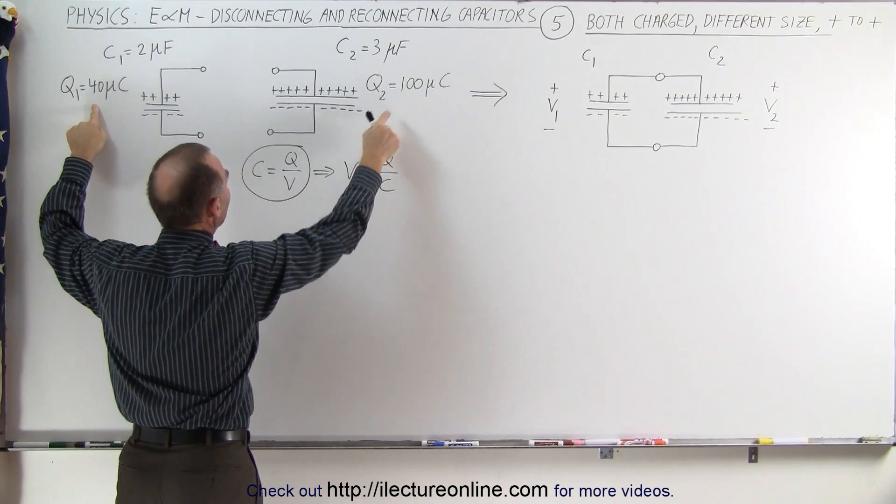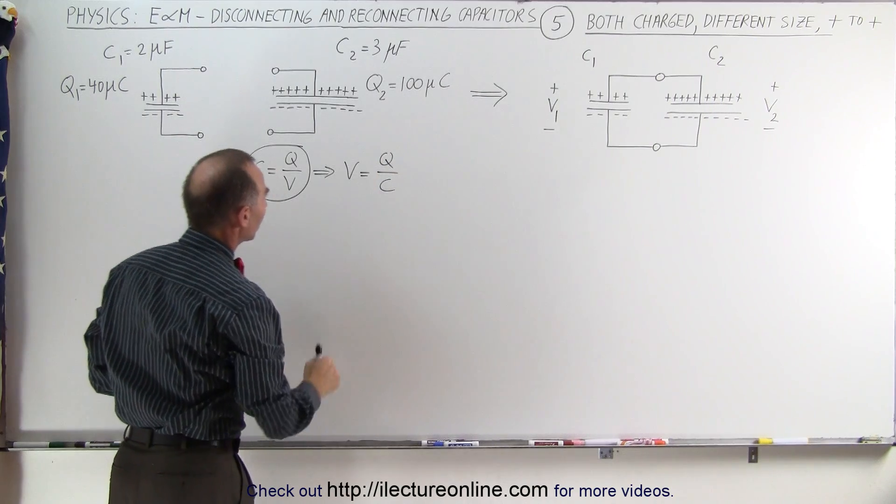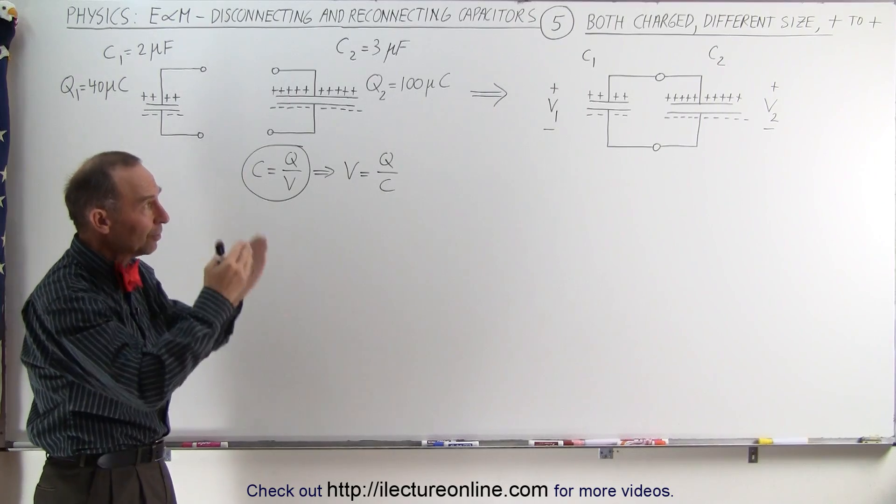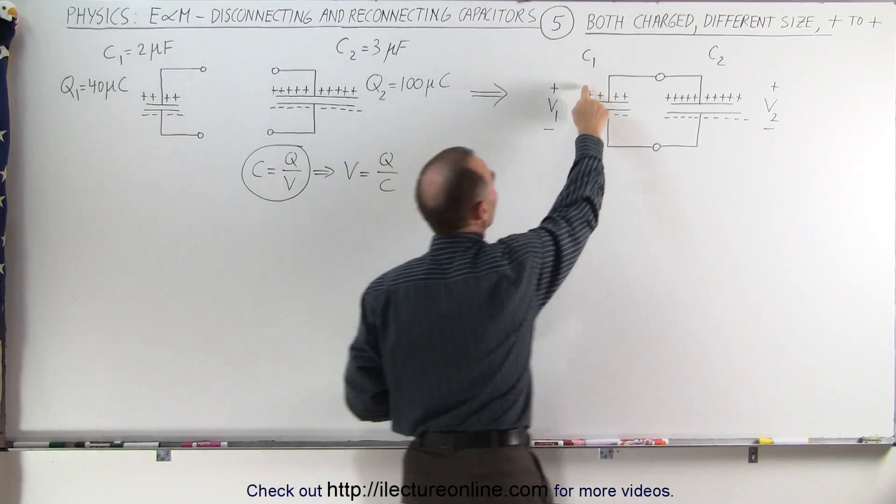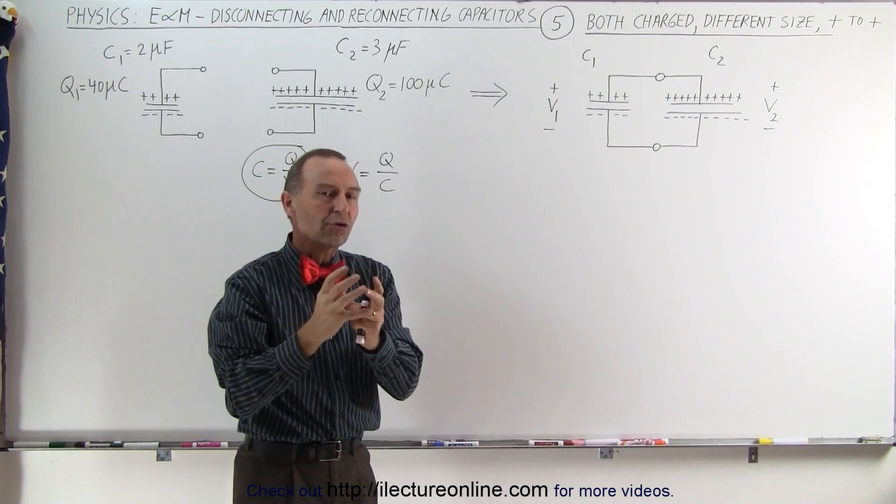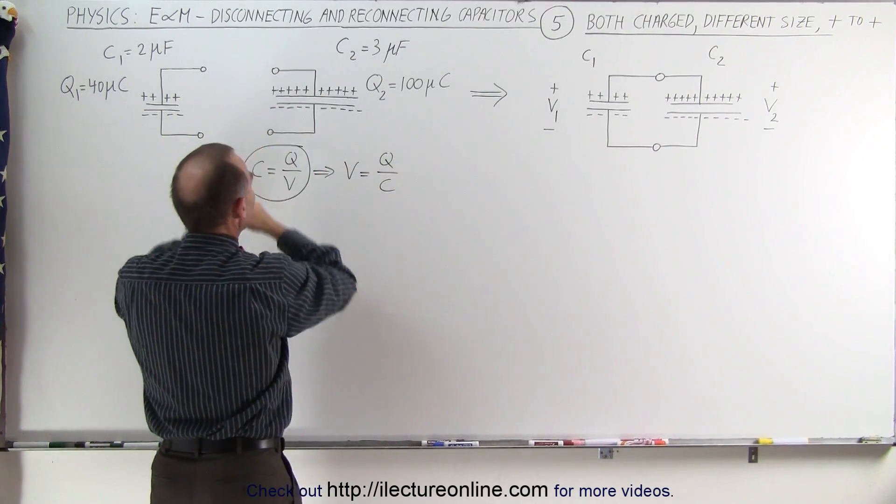The charge on them is 40 and 100 microcoulombs. Of course, the equations for definition of capacitance are still the same, but now we're connecting them positive to positive end. That means that the total charge at the end is going to be equal to the total charge in the beginning.